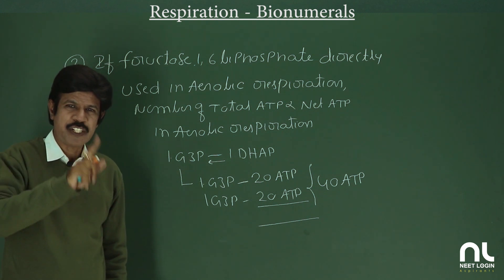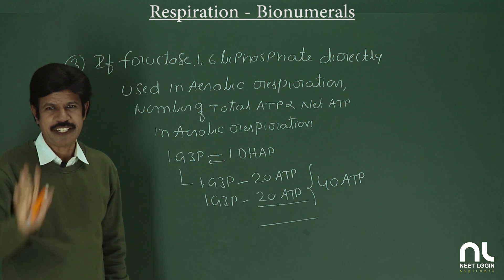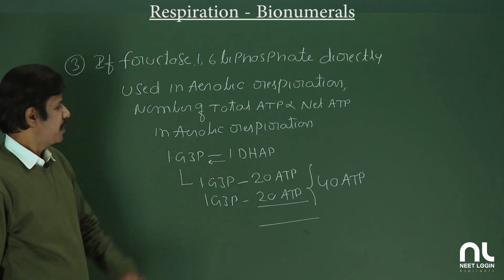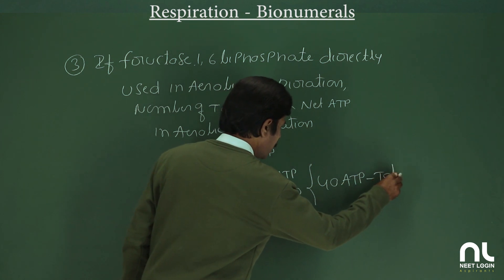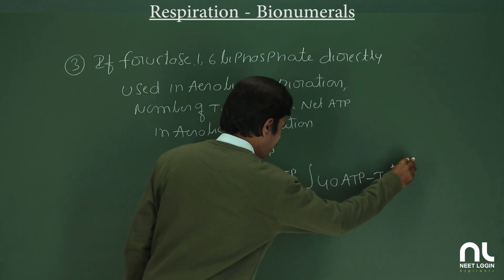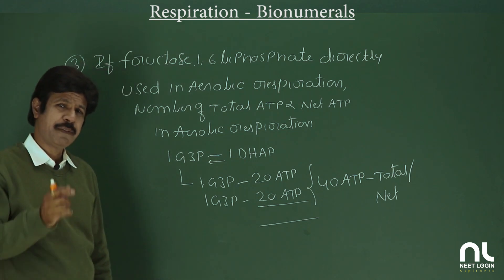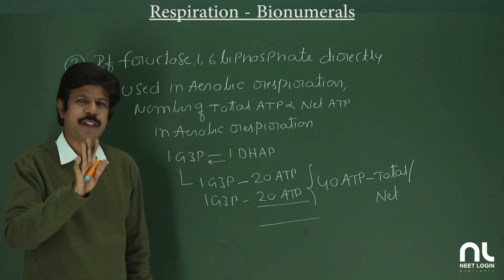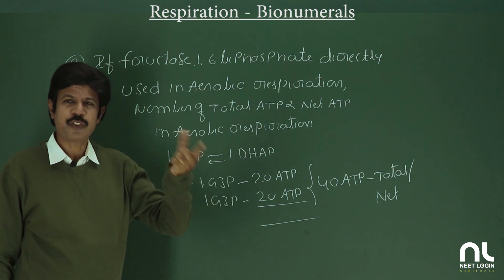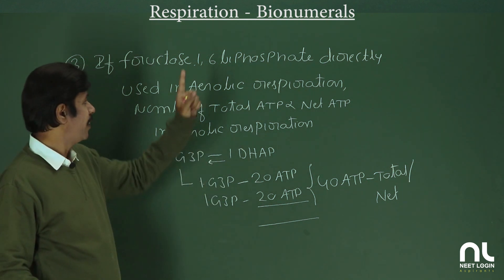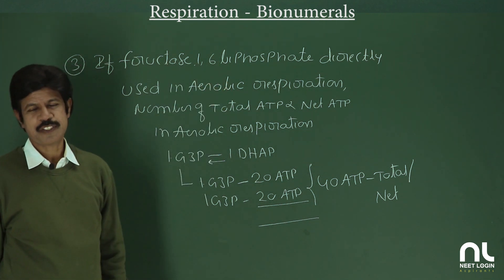Because reactions 1 and 3 involve no ATP consumption when starting directly from fructose 1,6-bisphosphate, the total number of ATP is 40 and the net gain of ATP is also 40. There is no consumption in those steps, so both total and net equal 40 ATP.